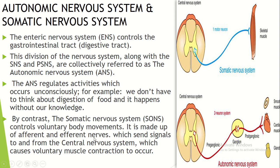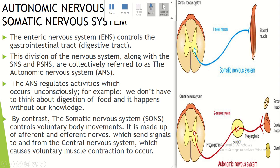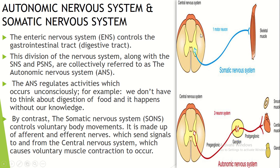The Somatic Nervous System sends signals to and from the Central Nervous System, which causes voluntary muscle contraction to occur. All movements are commanded by the brain and the spinal cord. The somatic system connects to the skeletal muscles of the body, so you can move your arms and legs voluntarily.